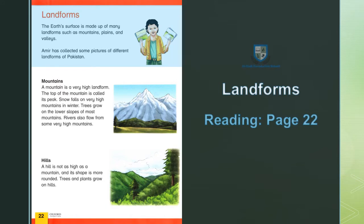Land Forms — Zemeen-e-Sata. The earth surface is made up of many land forms such as mountains, plains and valleys. Aamir has collected some pictures of different land forms of Pakistan.